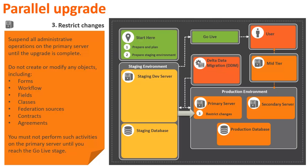In the third stage, suspend all administrative operations on the primary server until the upgrade is complete. Do not create or modify any objects including forms, workflow, fields, classes, federation sources, contracts, agreements, and so on. You must not perform any such activities on the primary server until you reach the go live stage. For detailed information about the restrictions, refer to the product documentation.